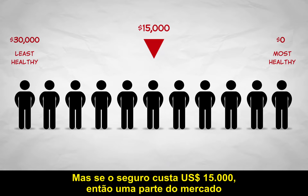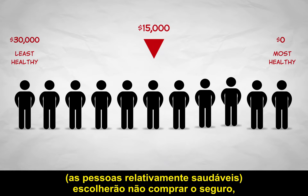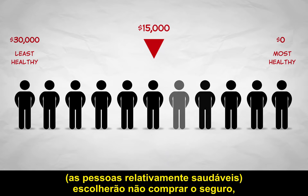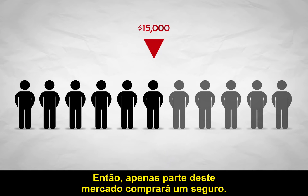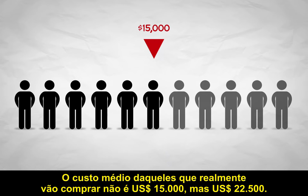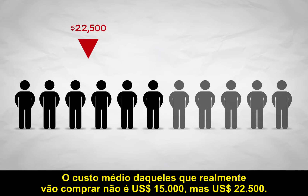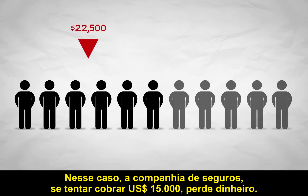But if the insurance costs $15,000, then a portion of the market — the relatively healthy people — will choose not to buy insurance, as the cost of that insurance is greater to them than the expected benefit. So only part of this market will buy insurance. The average cost of those who actually will buy is then not $15,000, but $22,500. In that case, the insurance company, if it tries to price at $15,000, loses money.